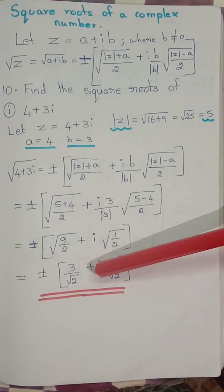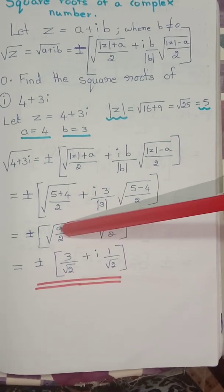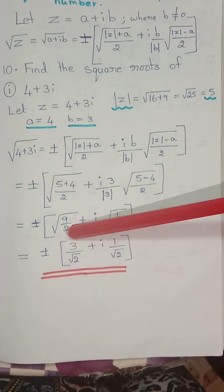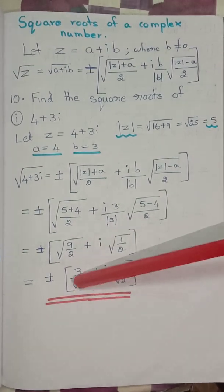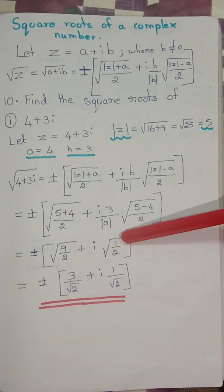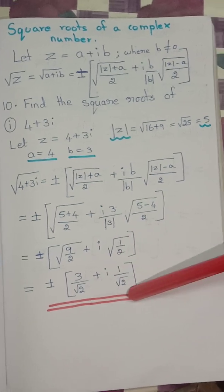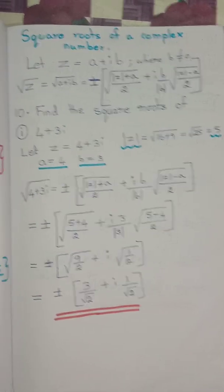Simplifying further: root of 9 by 2, and the imaginary part gives root of 1 by 2, which is 1 by root 2. This gives the square root of 4 plus 3i.